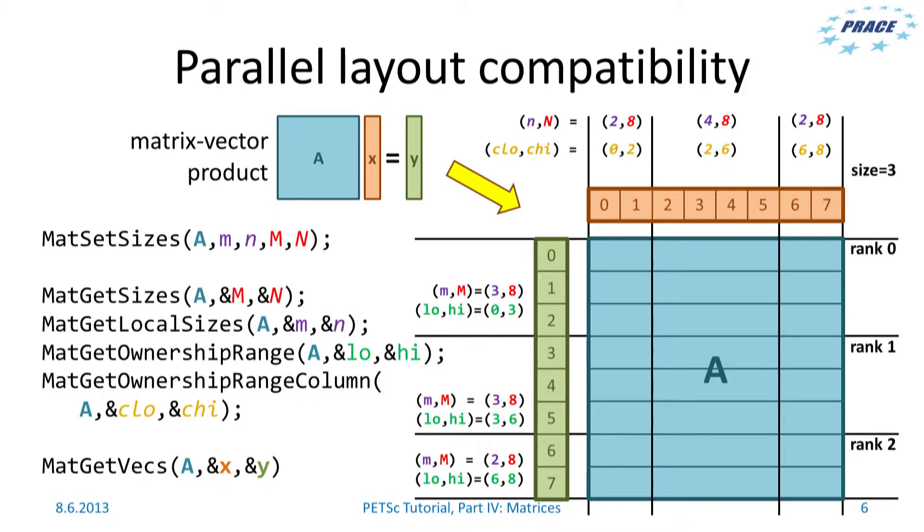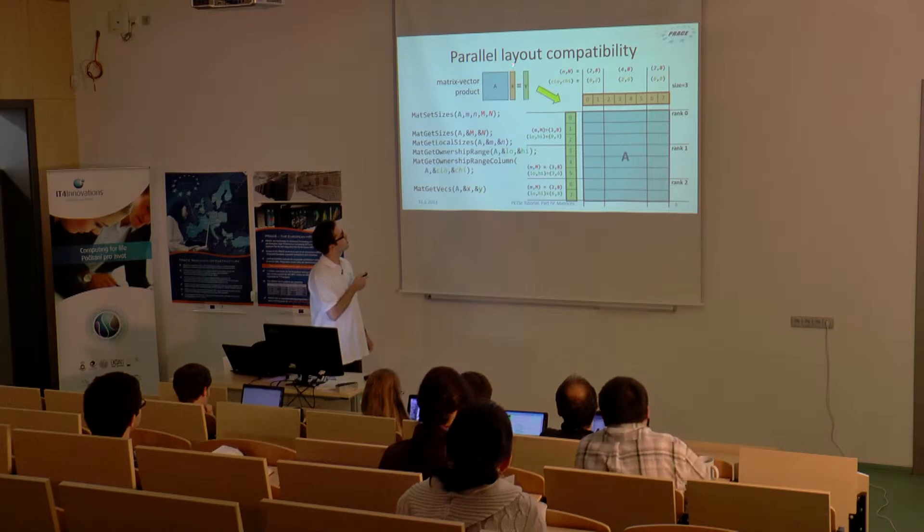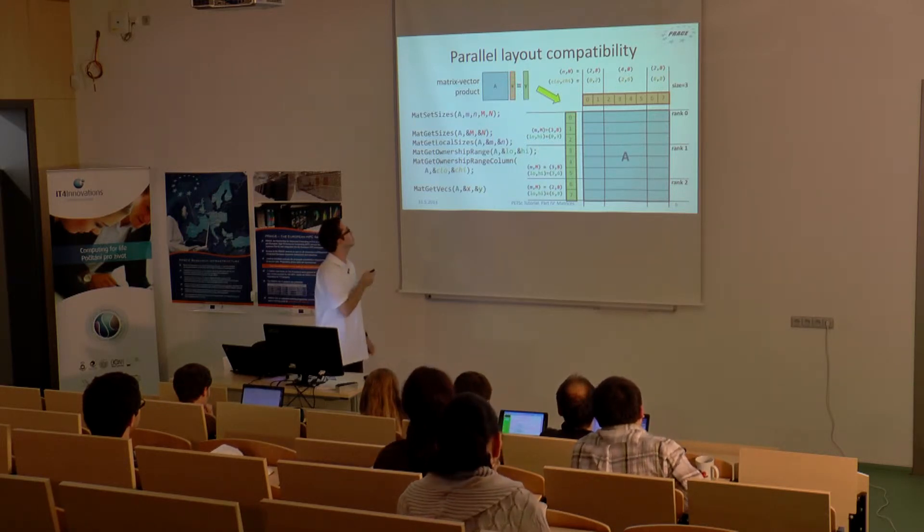And now how it works regarding the parallel layout. In case of matrices, you have basically row layout and column layout. In this case, you for example have local numbers of rows 3, 3, and 2, and local numbers of columns are 2, 4, and 2. But rank 0 owns this portion, this whole portion of rows, and so on.